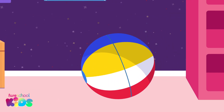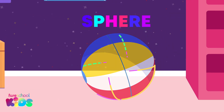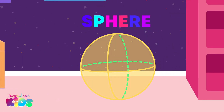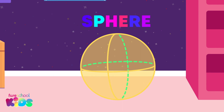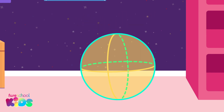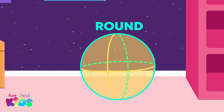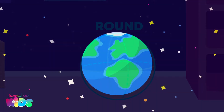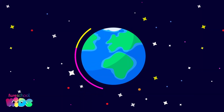My beach ball is a sphere — can you say sphere? A sphere is perfectly round. Planet Earth is also a sphere.